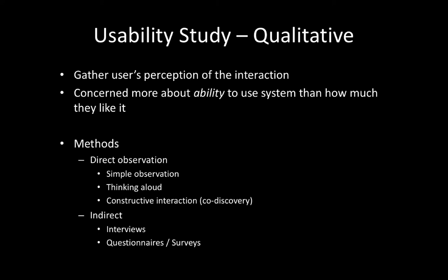The idea is to get the user's perception of the interaction: how able are they to use the system, how much did they like it. There are three direct observation methods: simple observation where you just watch, thinking aloud where people talk through the process, and constructive interaction or co-discovery with two users working together. There are also indirect methods like interviews and questionnaires. A good usability study does all of these.